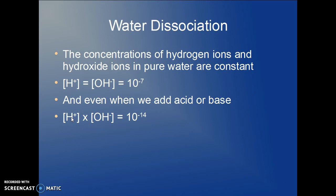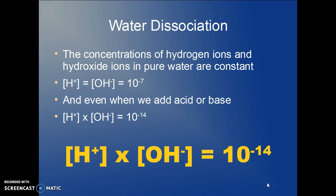So when the hydrogen ion concentration goes up, the hydroxide ion concentration will go down. This is a very important equation for you to memorize. The hydrogen ion concentration times the hydroxide concentration is 10⁻¹⁴.